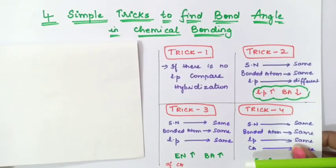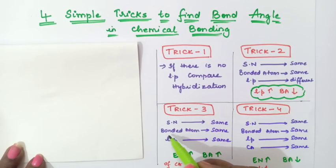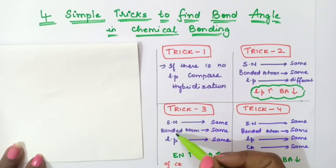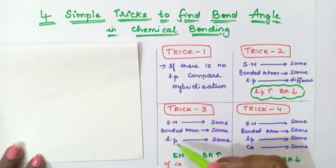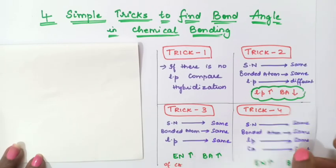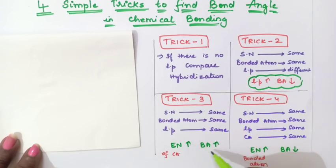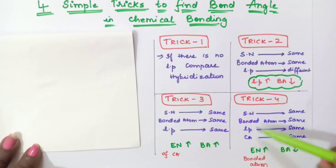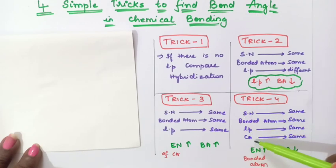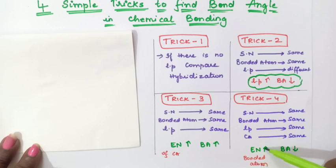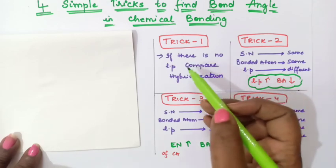Trick number three: if steric number, bonded atoms, and lone pair are all the same, then apply the electronegativity rule — if electronegativity of the central atom increases, bond angle also increases. Trick number four: if all four — steric number, bonded atom, lone pair, and central atom — are the same, then check the bonded atom: if electronegativity of the bonded atom increases, bond angle decreases. Let's take examples and see how to apply these.